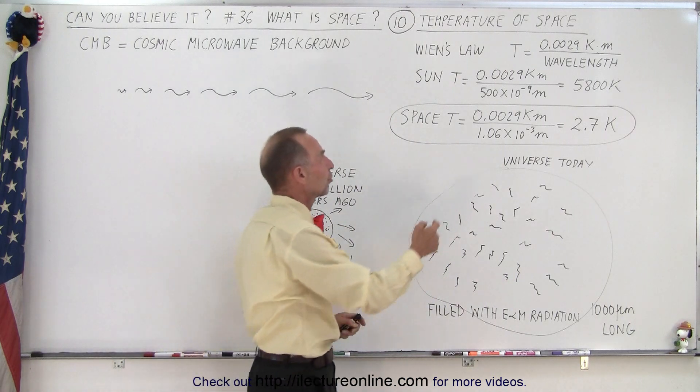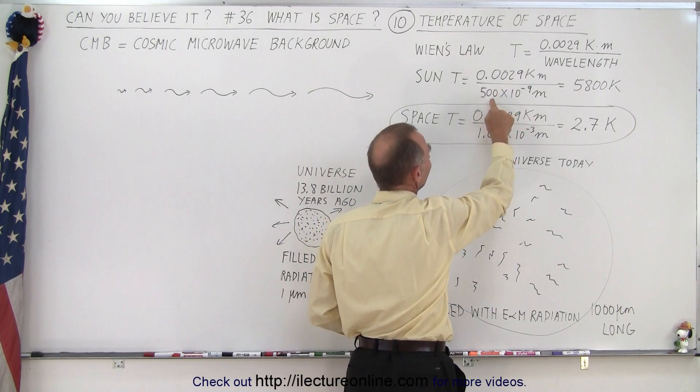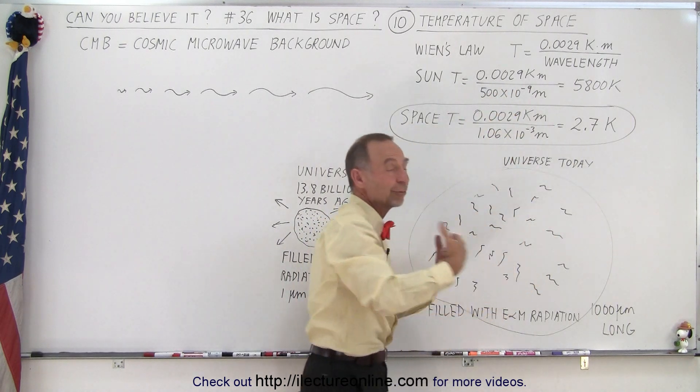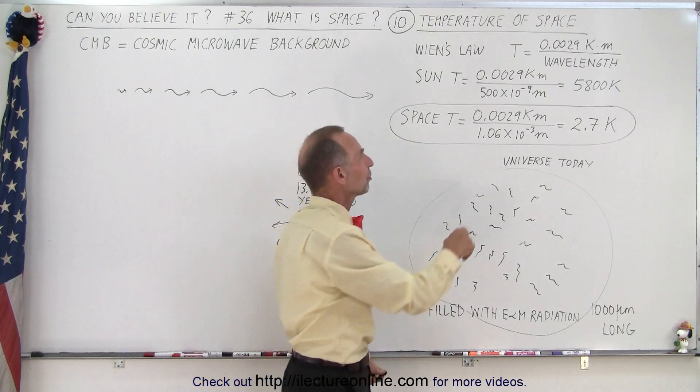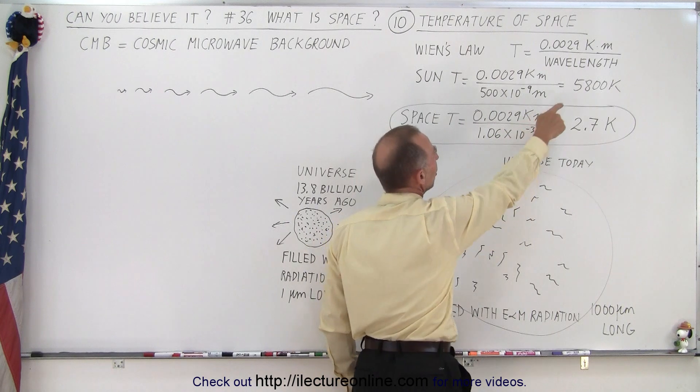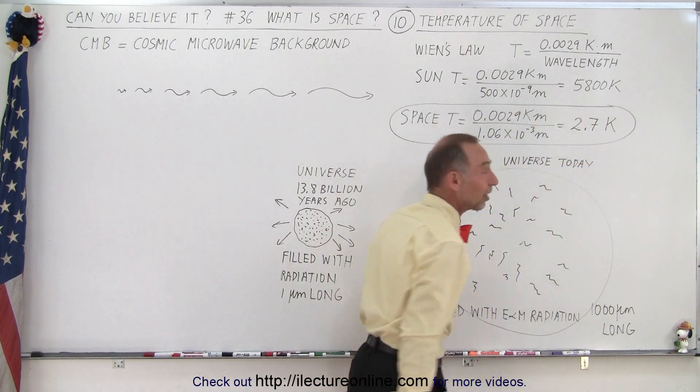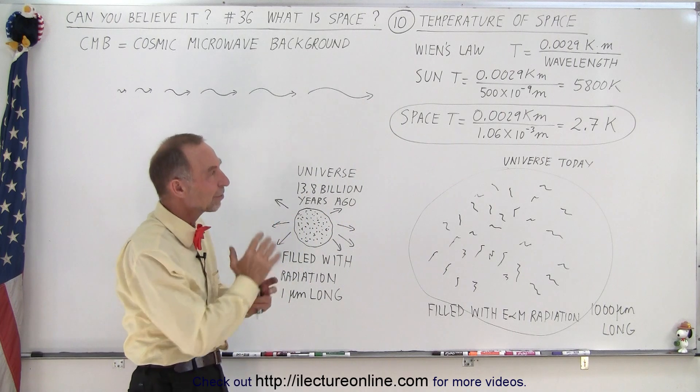So, for example, the surface temperature of the sun is equal to 0.0029 divided by the radiation we get from the sun. The sun, of course, is a distribution of radiation, but the peak value is around 500 nanometers or 500 times 10 to the minus 9 meters, which tells us that the surface of the sun is about 5,800 Kelvin. So that's a little bit less, but that's pretty close.